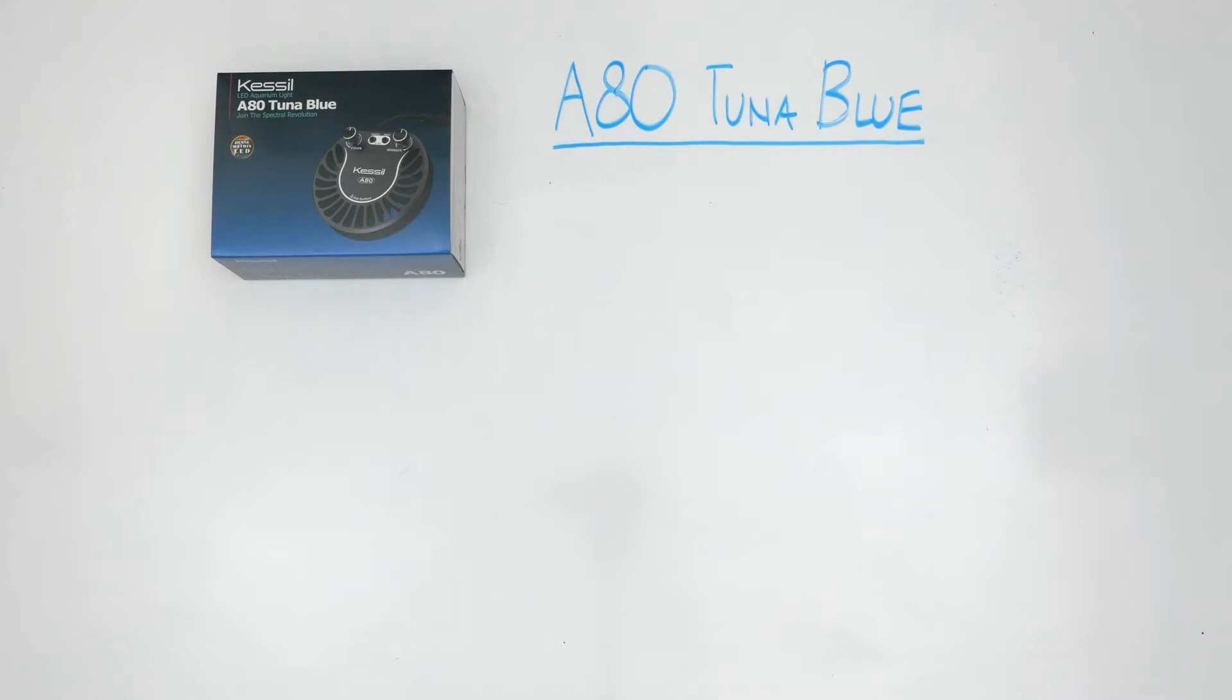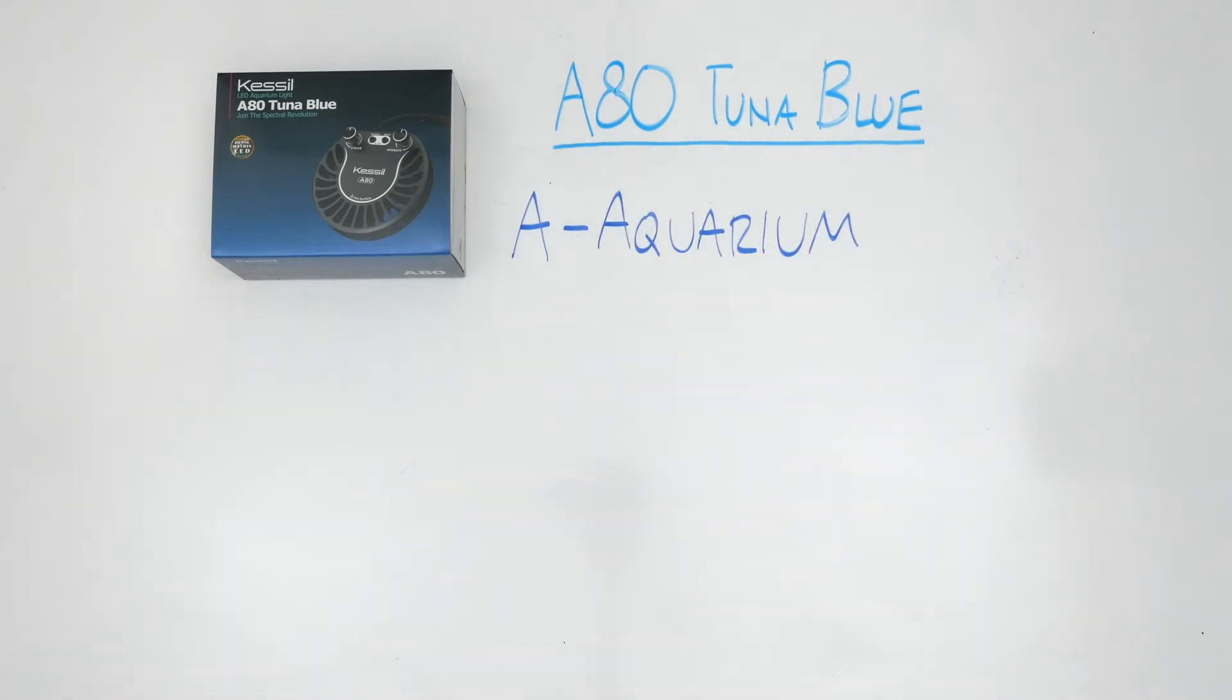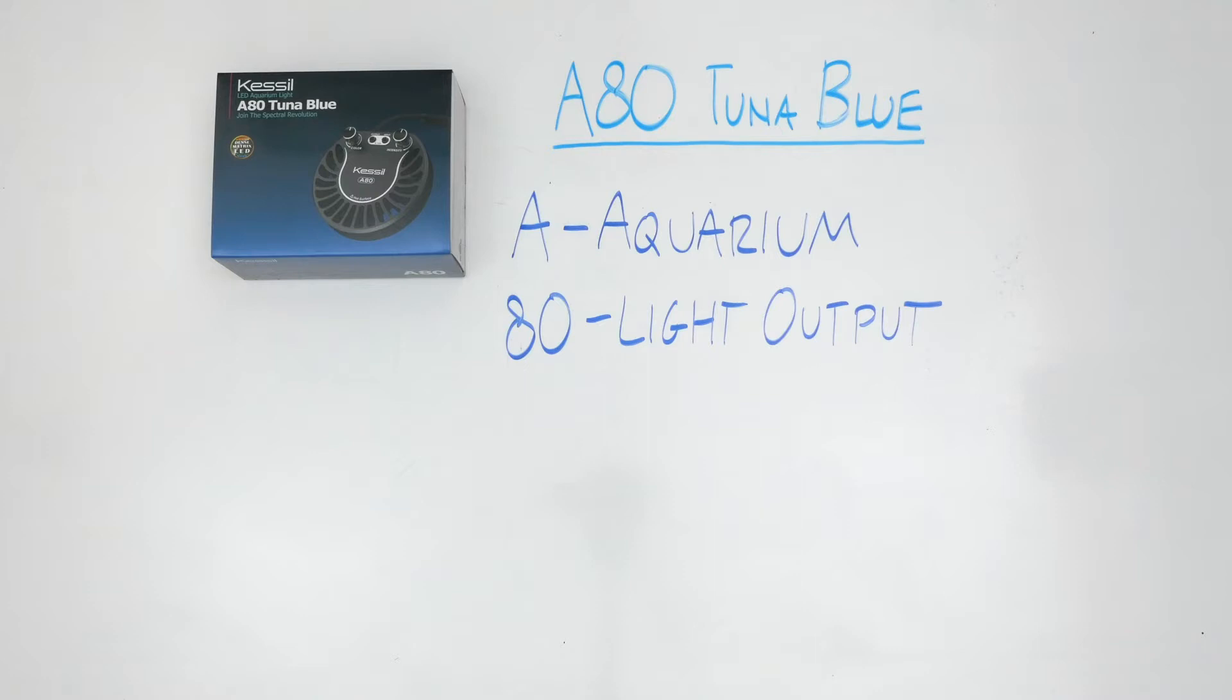First, let's break down the name A80 Tuna Blue. The A means that this light is designed specifically for aquariums. 80 means that the A80 Tuna Blue has one-quarter the light output of the A360 and one-half the light output of the A160, even though it uses just 15 watts of power to produce this output. In fact, the A80 is Kessel's most efficient aquarium light.